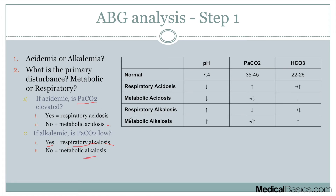For example, if we have a pH of 7.3, that automatically eliminates the alkalotic possibilities. That's our first step. Now we look at the PaCO2. If it's elevated, it's going to be a respiratory acidosis — because nothing else can cause an elevated PaCO2 together with a low pH. That essentially tells us whether it's respiratory acidosis. If it's not, then we know it's got to be a metabolic acidosis. We can do the same thing with the alkalotic situation.